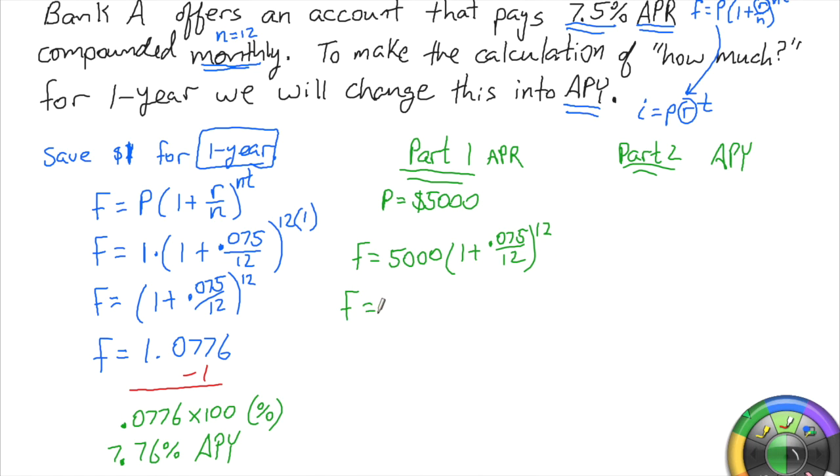5,000 parentheses one plus 0.075 divided by 12 raised to the 12 is $5,388.16. So the interest earned on this compound part of our problem is $388.16. But to do this, you need a scientific calculator.